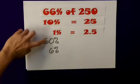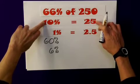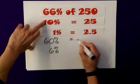So for 60%, I need 6 lots of this here. Now, I know 4 of them is equal to 100, and another 2 of them would give me 150.